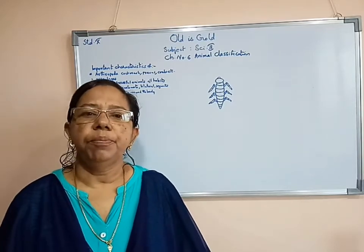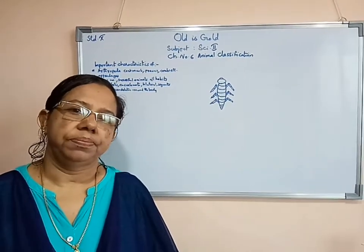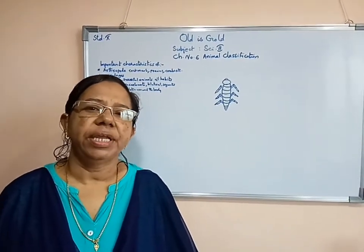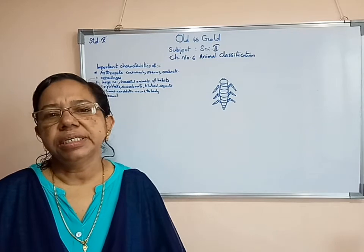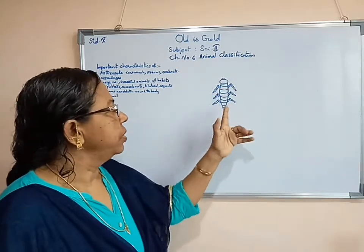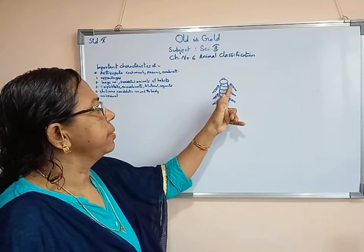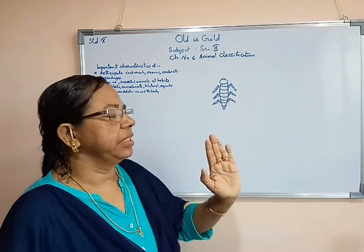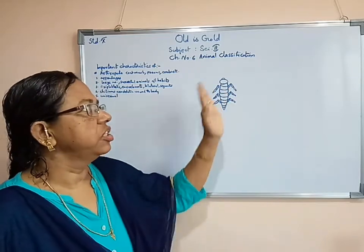What are the important characteristics of Arthropoda? Arthropoda means jointed appendages. Appendages means legs. Here one example is shown. Their legs have many cuts — many joints we can see. So appendages means legs, and their legs have many joints.